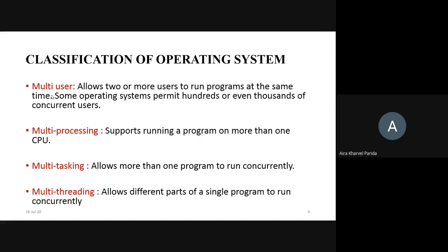Coming to multitasking — it allows more than one program to run concurrently, meaning one after another. Whatever computer you are using right now is considered multitasking. For example, I am showing my PPT to you through my computer. Behind the computer, if I minimize that PPT, I can do other jobs. That can be considered as the multitasking operating system.